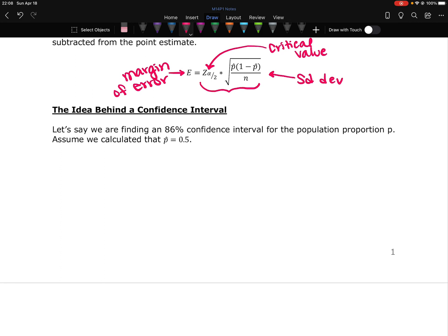So let's say we want to find an 86% confidence interval for the population proportion p. And we have calculated p hat to be 0.5. So this is a simple example, basic example, of what we would do. One of the things about confidence intervals is that they are always used with normal data. So they're always used with data that comes from a normal distribution.